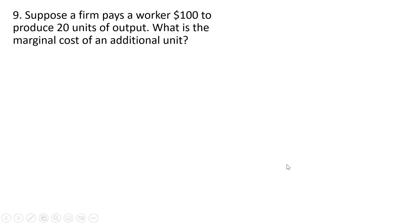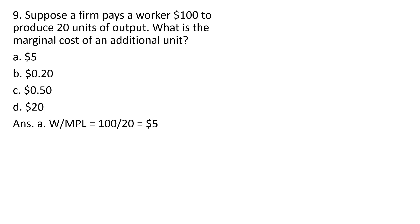Question 9. Suppose a firm pays a worker $100 to produce 20 units of output. What is the marginal cost of an additional unit? The correct answer is $100 divided by 20, or $5. If you take the wage and divide it by the marginal product of labor — in this case, the marginal product of labor being 20 — you get marginal cost. The correct answer is A, $5.